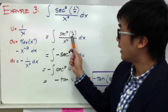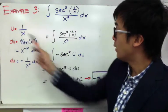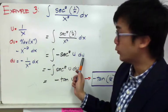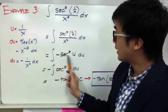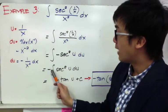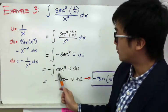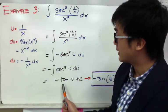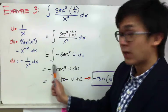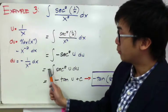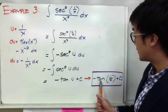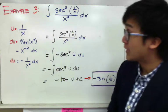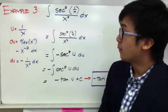We replace 1 over x with u and 1 over x squared dx with negative du. This gives us the integral of negative secant squared u du. Pulling the negative outside, we integrate secant squared u du, which equals tangent u plus C. Including the negative sign, our final answer is negative tan(1 over x) plus C. That's how we use the substitution method combined with integral rules.